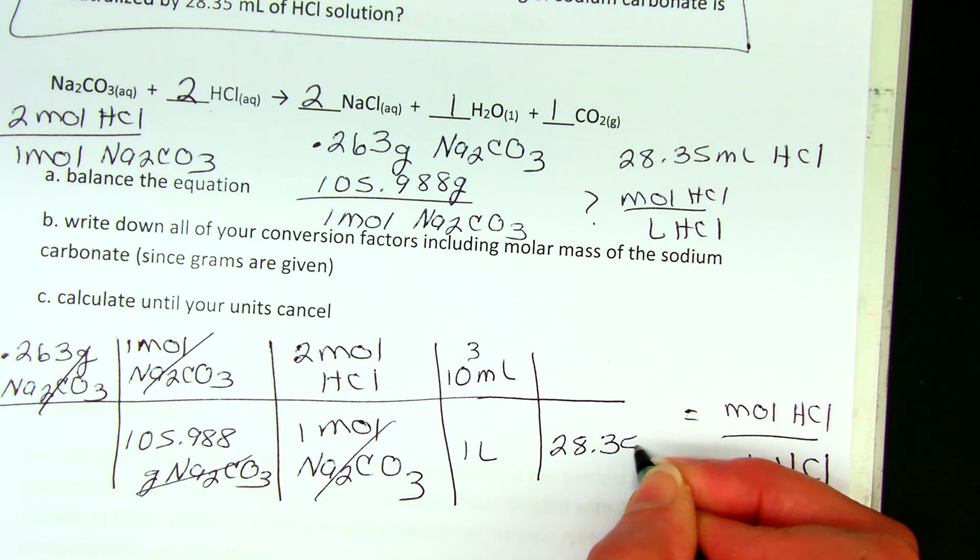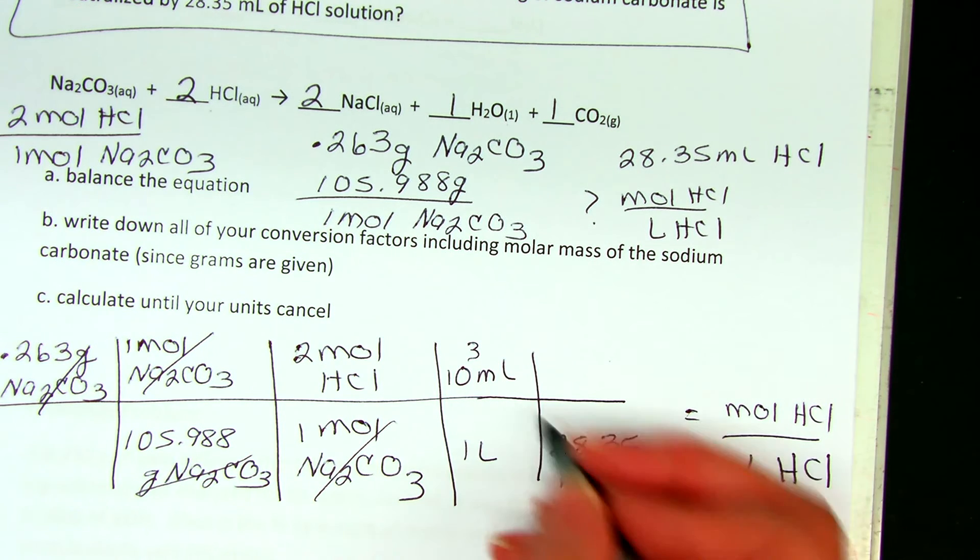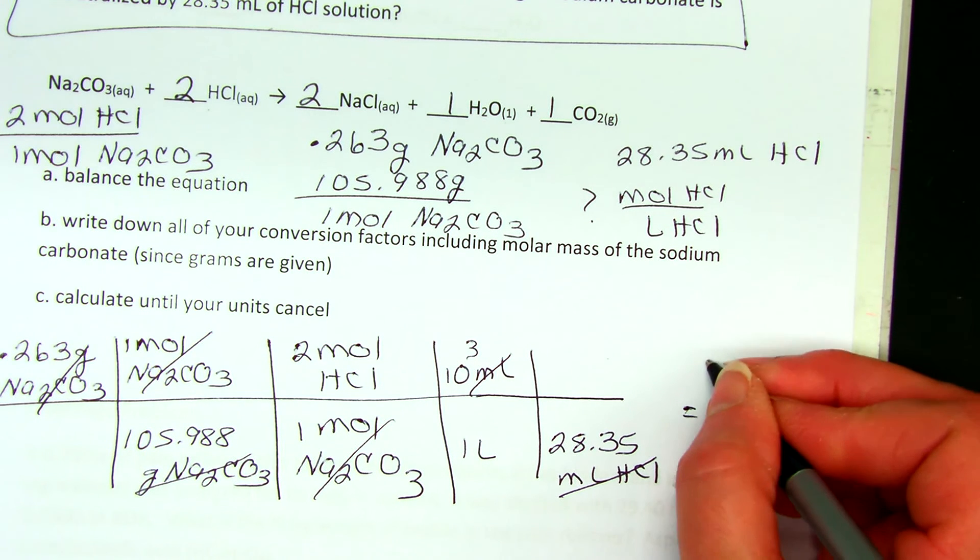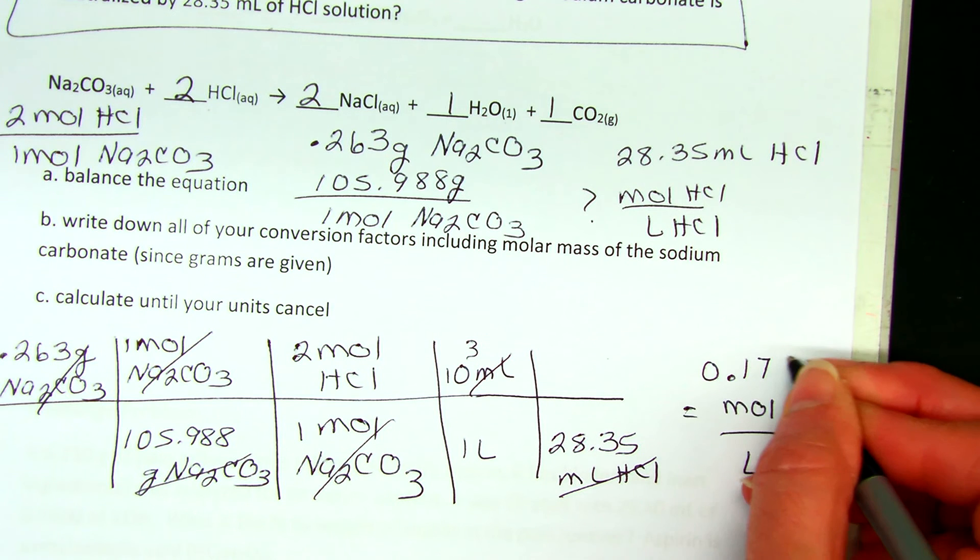So now I put my 28.35 milliliters of HCl on the bottom, so my milliliters cancel. I get the units I want—moles per liter—and it's 0.175.